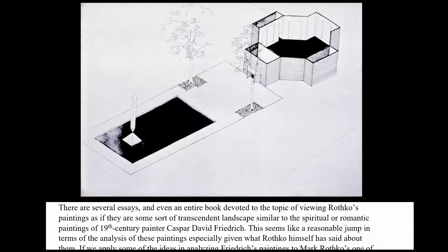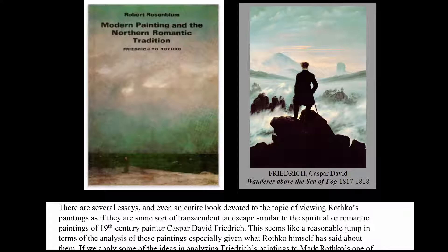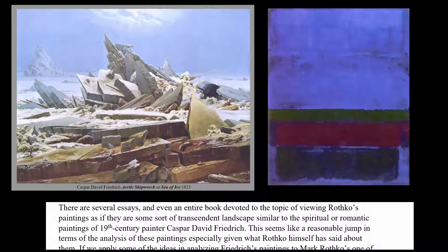It's interesting because he died in 1970. There are several essays — an entire book I had to read as an undergrad — devoted to looking at Rothko's paintings as if there's some sort of transcendentalist landscape along the lines of the romantic painters from the 19th century, like Caspar David Friedrich.